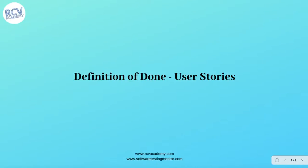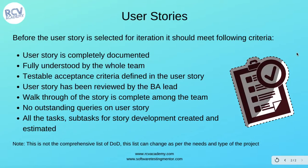In this ISTQB Agile Tester Certification tutorial, we are going to talk about definition of done for user stories. In the previous tutorial, we learned the definition of done for test levels. In this tutorial, we'll see what definition of done is at the user story level, and what criteria you can define in definition of done for user stories. Note that this list is not comprehensive and can change as per the needs and type of your project. These are some generic criteria found in the user story definition of done.